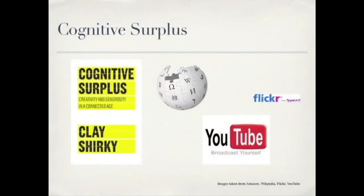Clay Shirky has recently highlighted the phenomenon of cognitive surplus — the combination of free time and access to digital tools that many people now have — which enables them to use digital technologies to create meaningful results from self-directed learning projects, particularly in groups online. Evidence for cognitive surplus and people's willingness to use digital technologies in their spare time for creative content is evident in sites such as Flickr, Wikipedia, and YouTube.